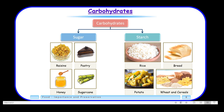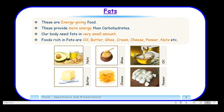We will now move on to another nutrient: fats. Fats are also energy-giving food and they provide more energy than carbohydrates. Our body needs fats in very small amounts. Food rich in fats includes oil, butter, ghee, cream, cheese, paneer, nuts, etc. If we eat a lot of fats, we will become obese, and obesity leads to many diseases. If you happen to eat a lot of fat, you need to do a lot of physical exercise so that fat does not deposit in your body. Excess fat causes a disease known as obesity.